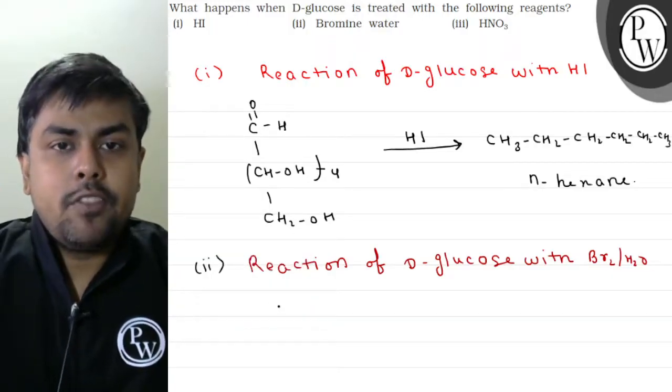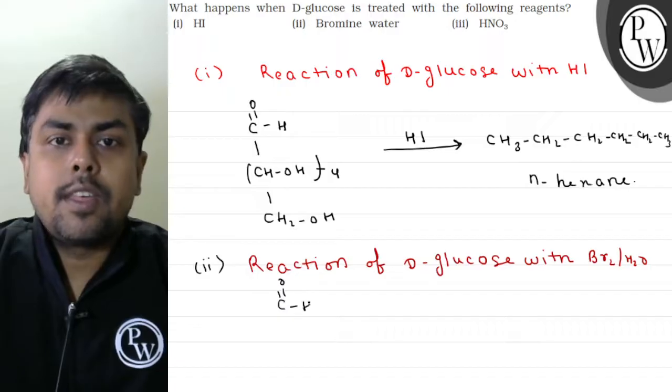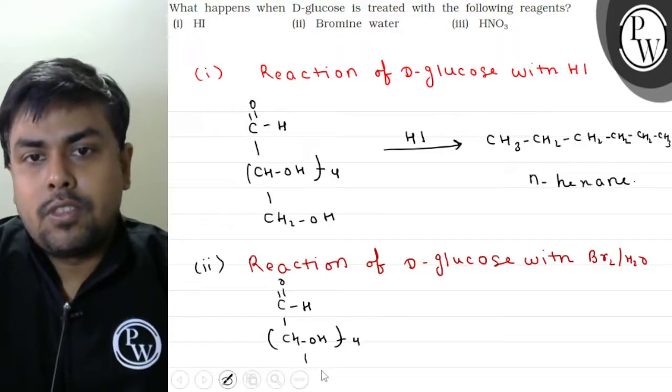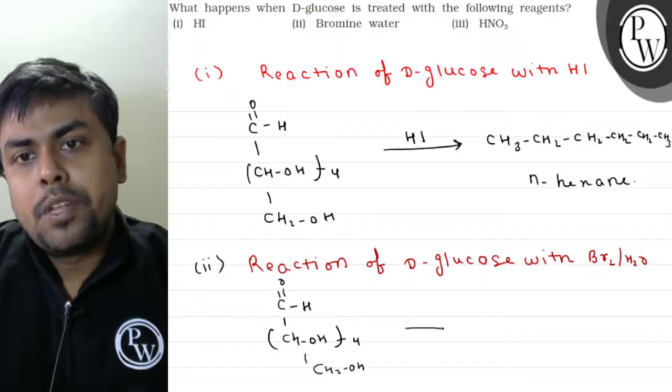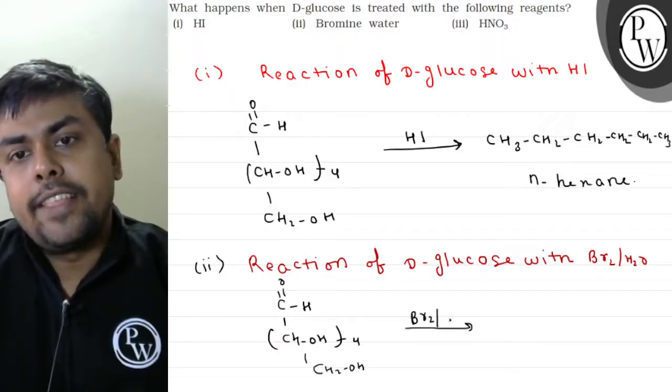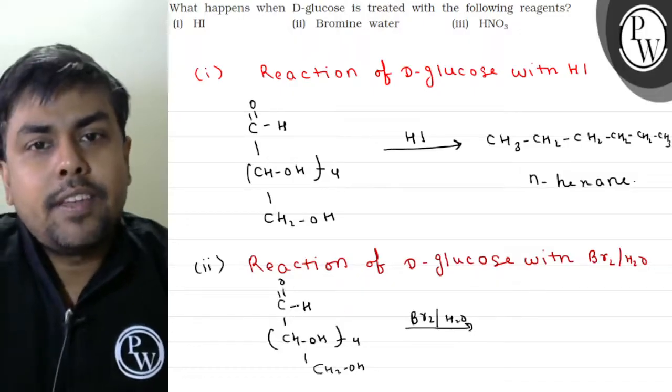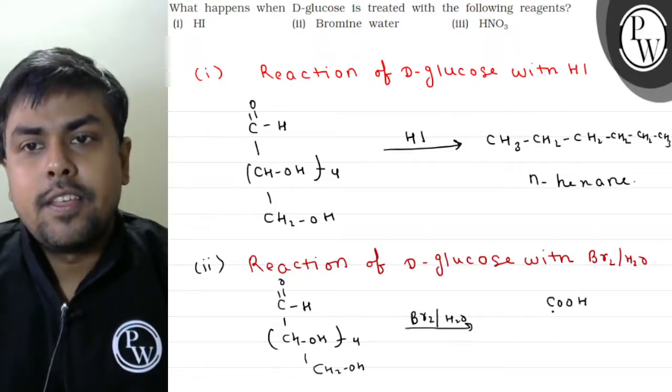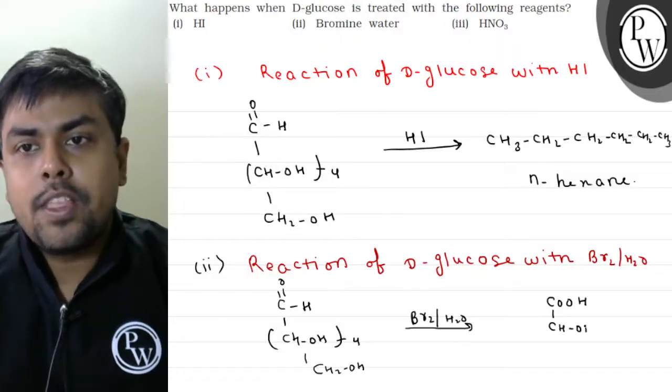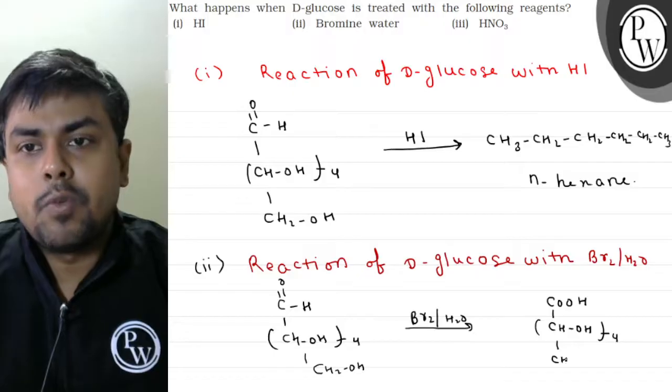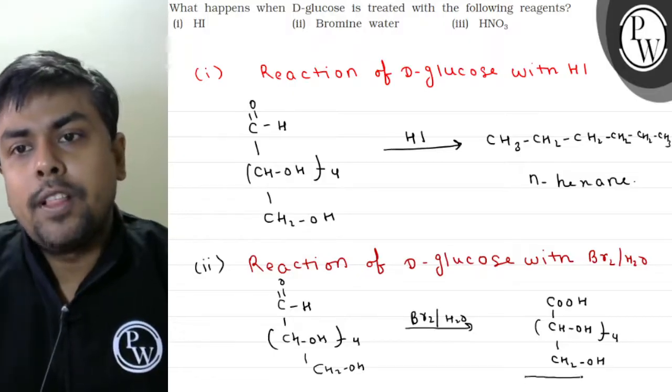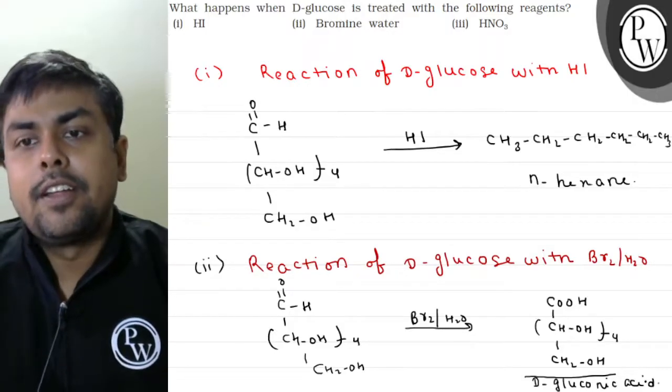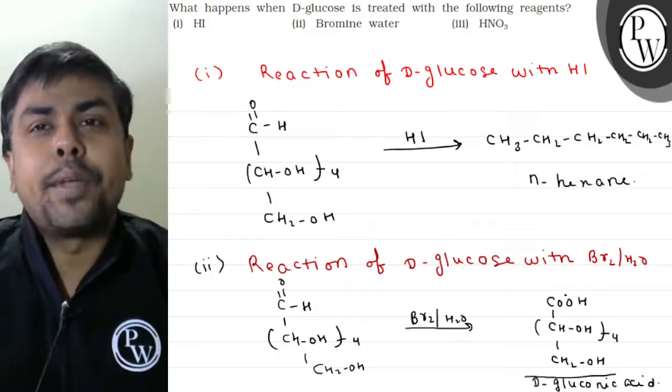If I am talking about this, I am having again sugar unit C=O, CHOH 4 times, and then CH2OH. The product is COOH, CHOH 4 times, CH2OH. We call this D-gluconic acid. This is the reaction of D-glucose with Bromine Water.